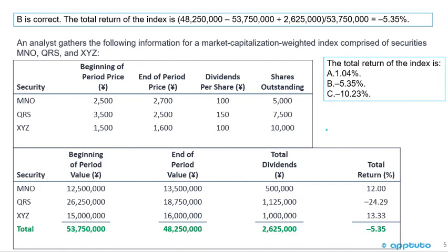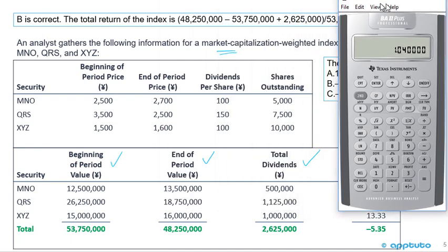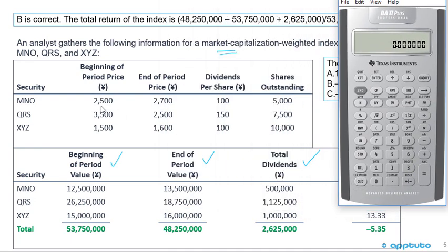This question is one where people sometimes make a mistake. We need the beginning of period price, the ending period price, the dividends per share, and the shares outstanding. Because it's market capitalization weighted, we need the beginning of period value. For MNO: 2,500 times 5,000 shares gives a market capitalization of 12,500,000. For QRS: 3,500 times 7,500 gives 26,250,000. For XYZ: 1,500 times 10,000 gives 15,000,000. Total beginning market cap: 53,750,000.